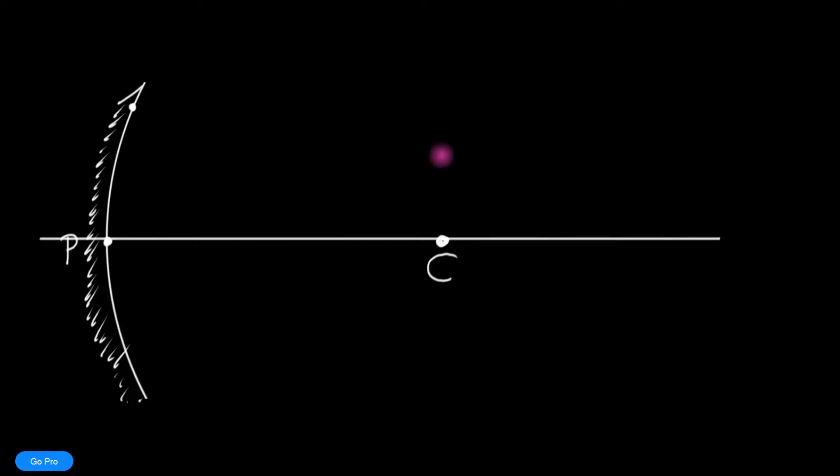Spheres have an amazing property: all the normals to every point on the sphere pass through the center of that sphere or the center of curvature. Therefore, if I want to draw a normal at this point, all I have to do is draw it from the center. Voila, there I have it.